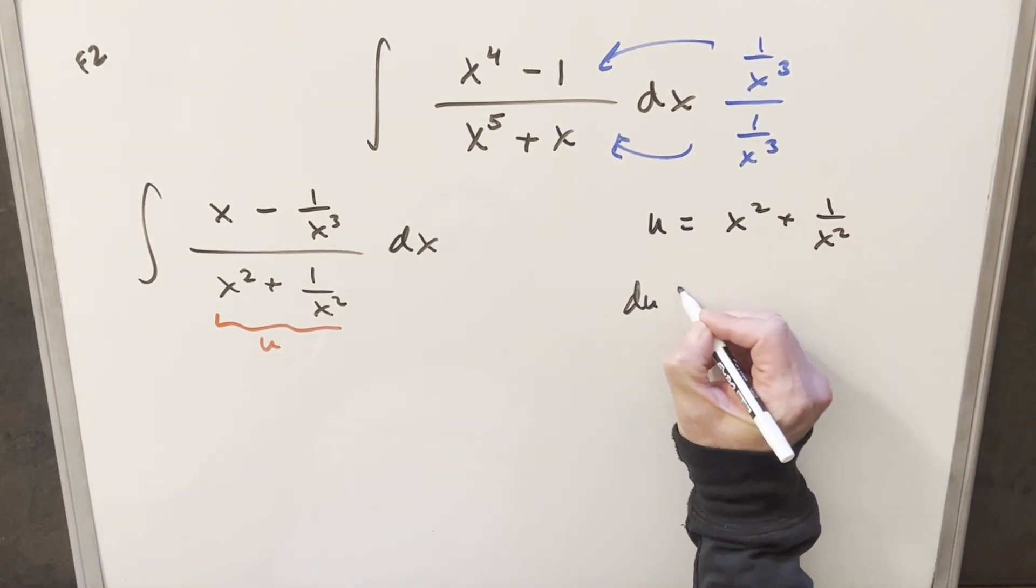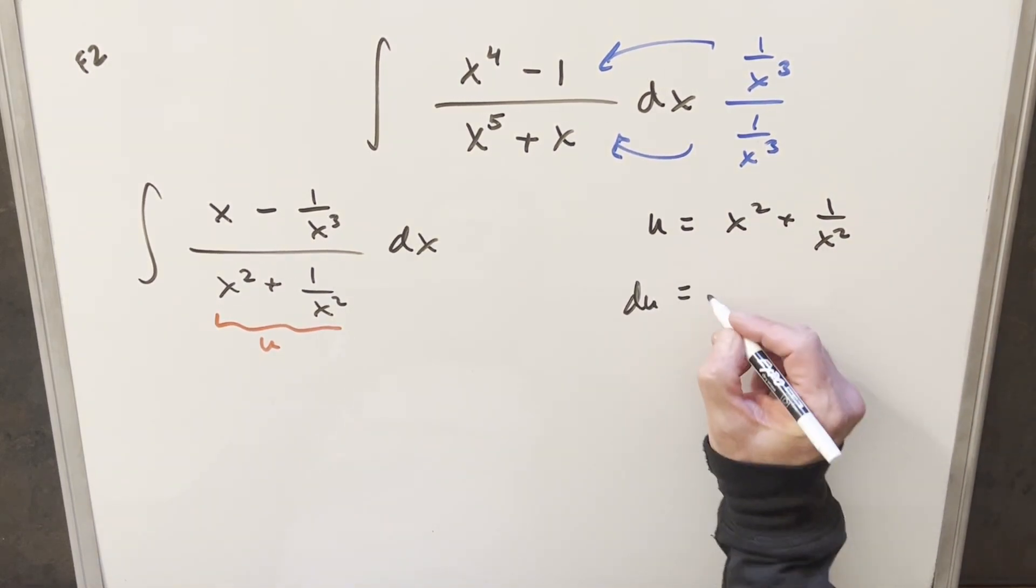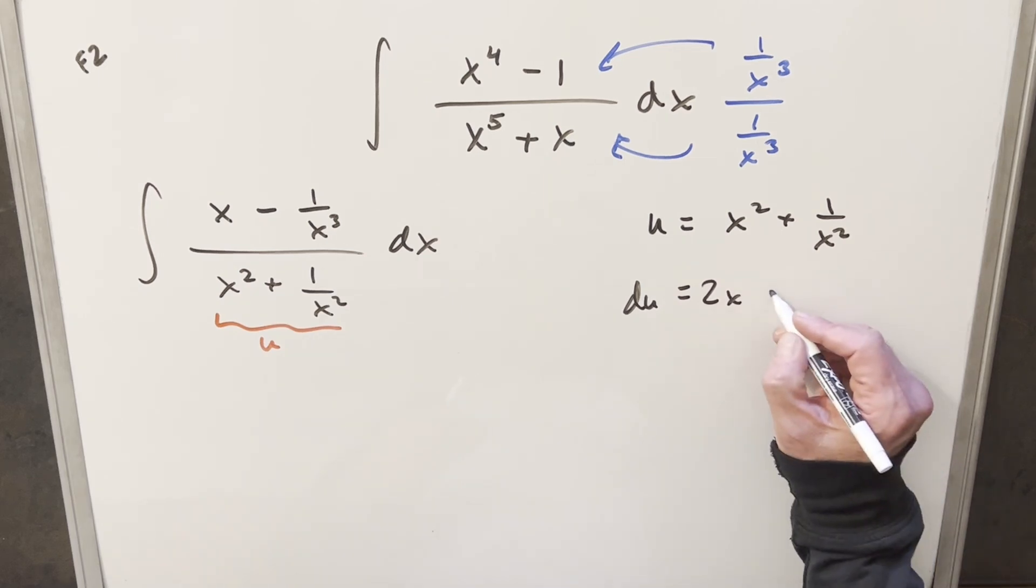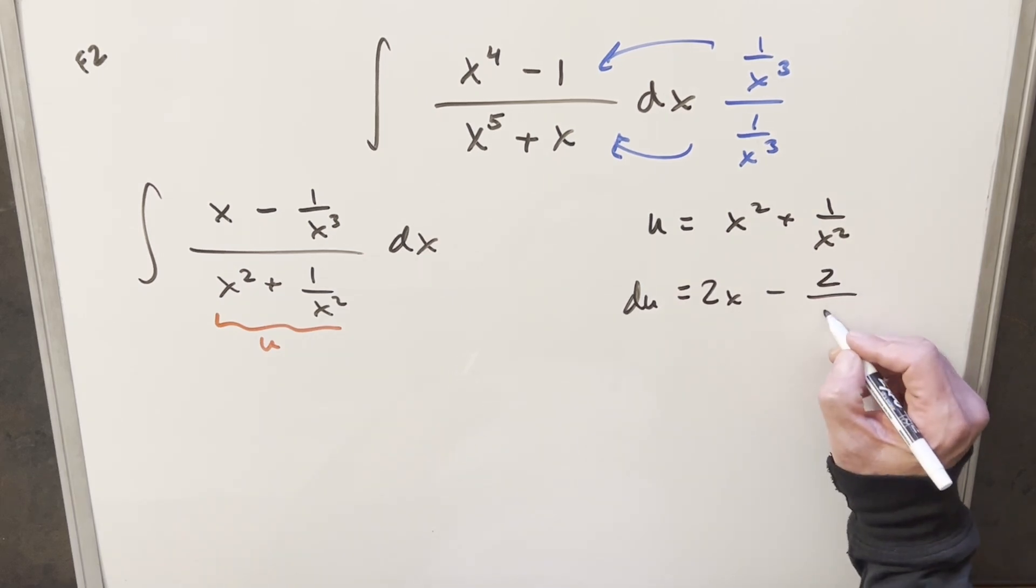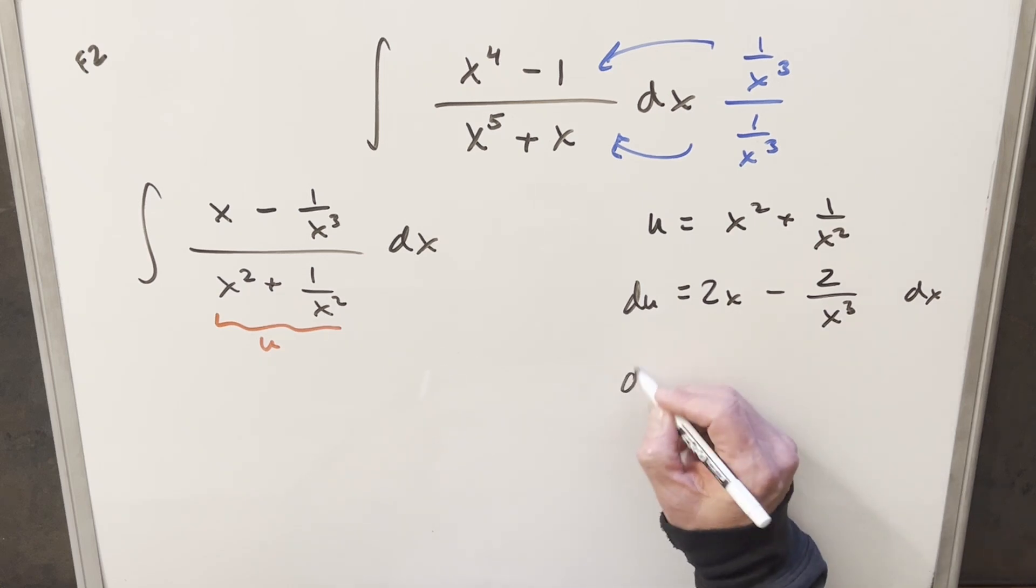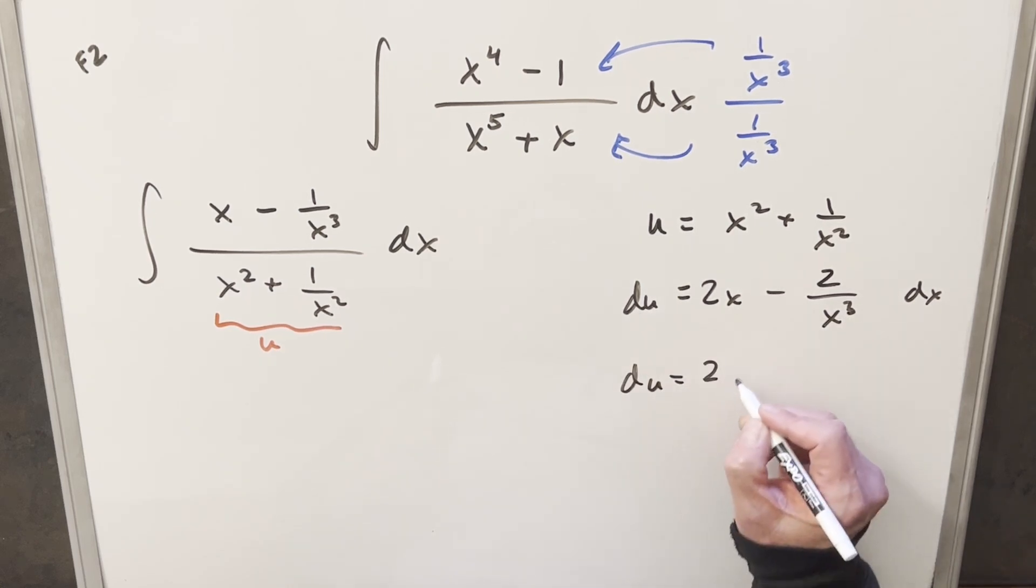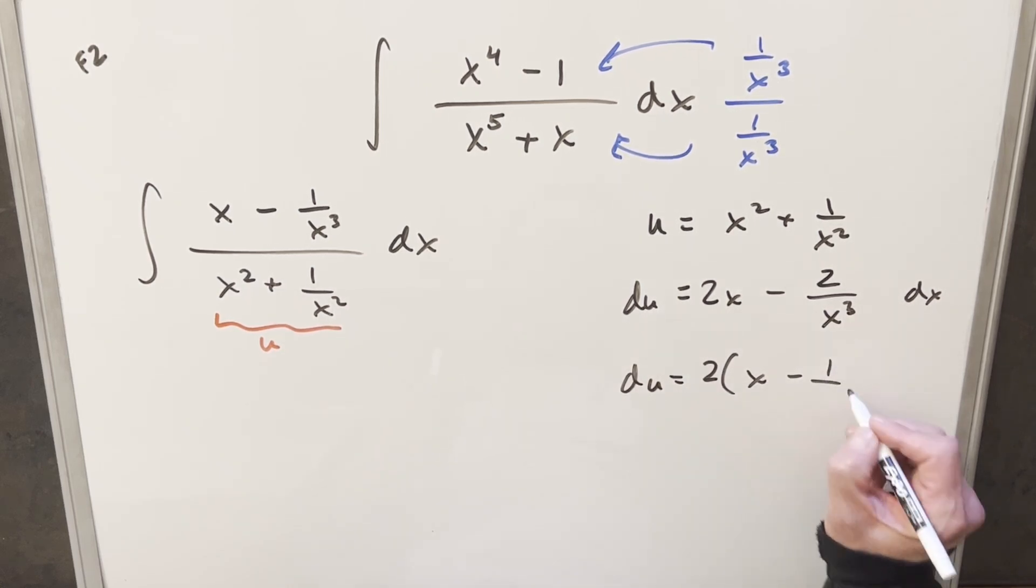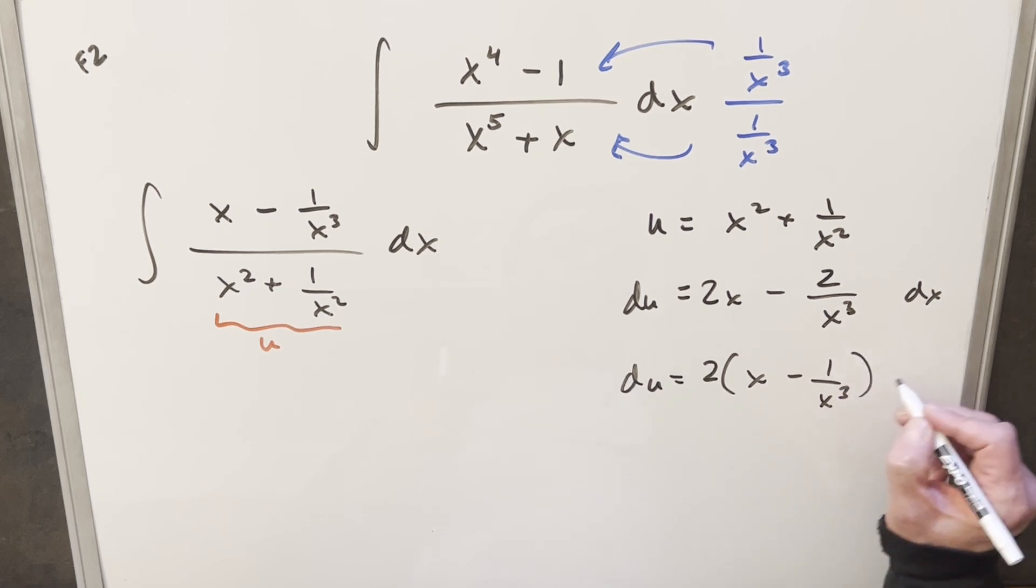I'll take a derivative. So our du value is just going to become this derivative here is going to be 2x. Derivative here is just going to be minus two over x cubed dx. But what I want to do is let's just factor a two out of this so I can rewrite this, bring a two out front, and write this as x minus one over x cubed dx.